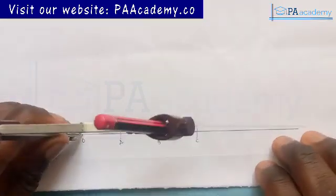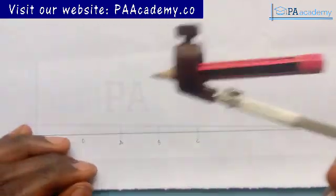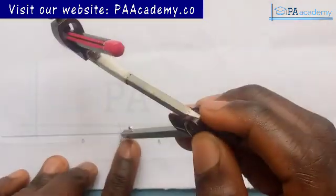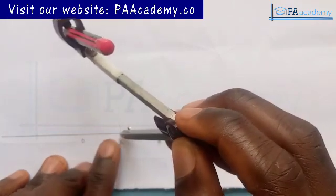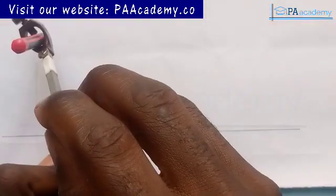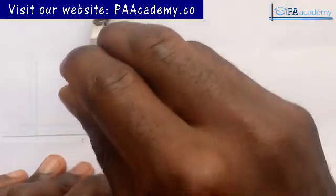So now we have the length of OC on the compass. With this length, you come to point A and draw an arc.